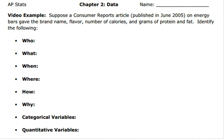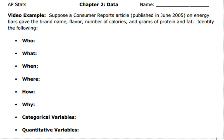Chapter 2 is all about looking at and understanding data. In this example, suppose a Consumer Reports article on Energy Bars gave the brand name, flavor, number of calories, and grams of protein and fat. We need to identify the who, what, when, where, how, why, and then the categorical and quantitative variables.